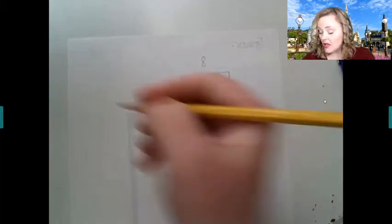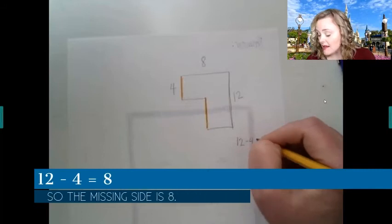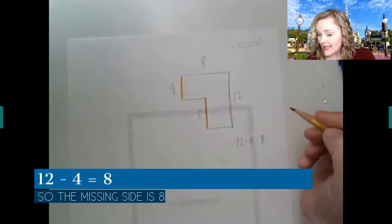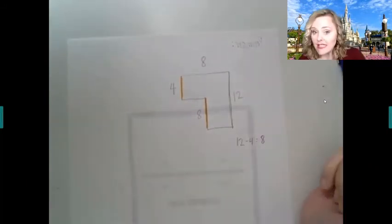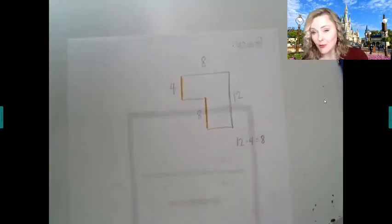Then this side - so four plus how many more is equal to twelve? Well, easily we can use our fact family: twelve minus four is eight, so this line is equal to eight. Now this shape is obviously not drawn to scale because here it's not quite the same, but just go with me, okay.